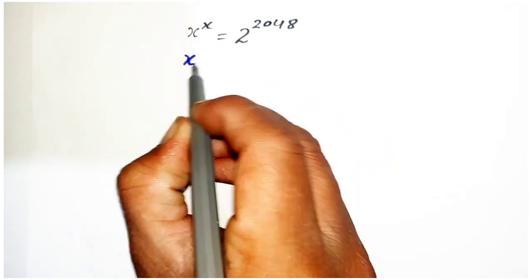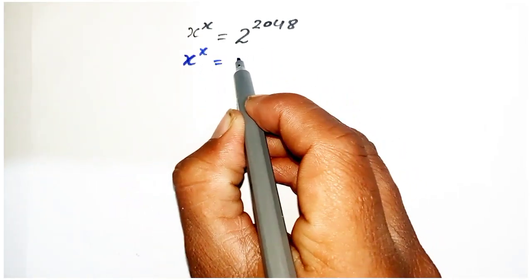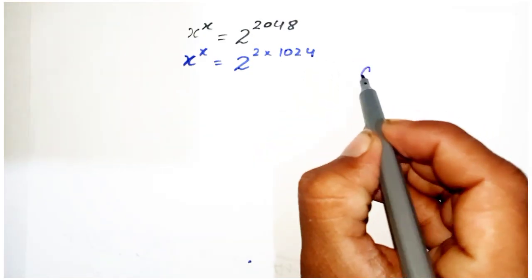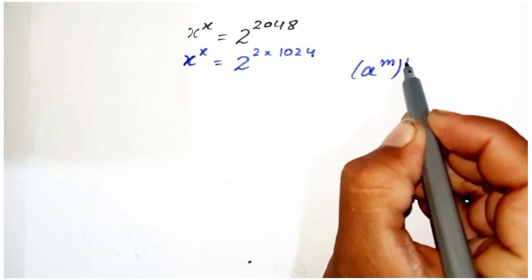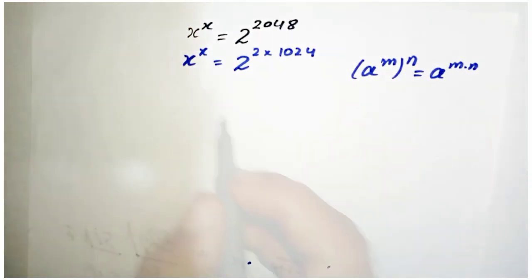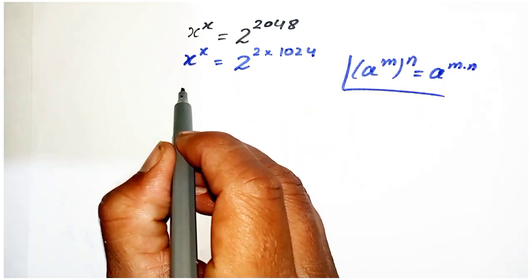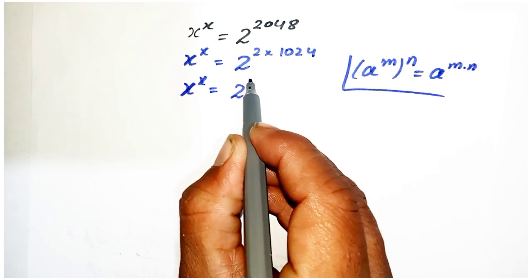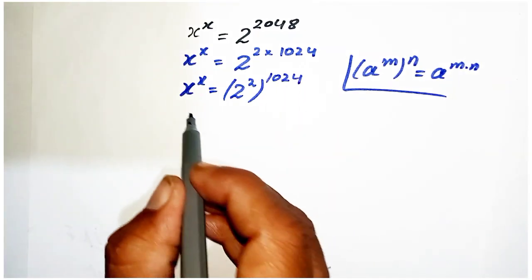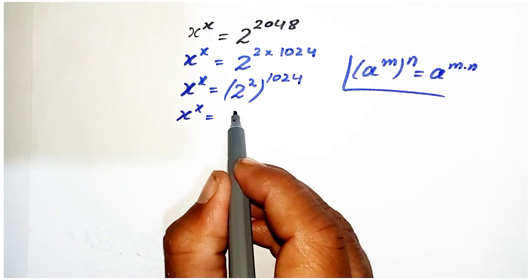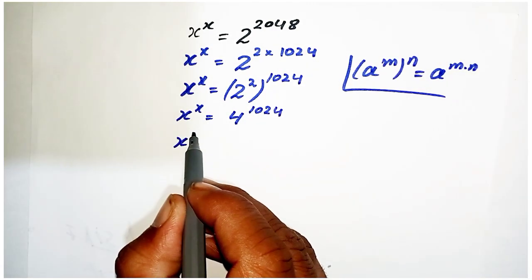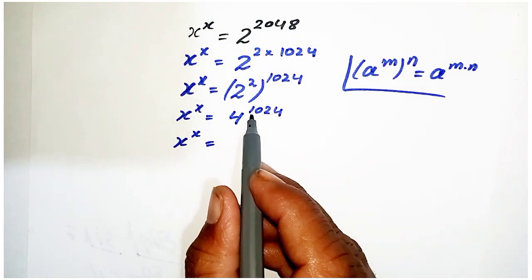First, we can write the power of 2 as 2 × 1024. We have a power rule: a^(m·n) = (a^m)^n. Applying this rule, we can write 2^(2×1024) = (2^2)^1024. Since 2^2 = 4, we get x^x = 4^1024.